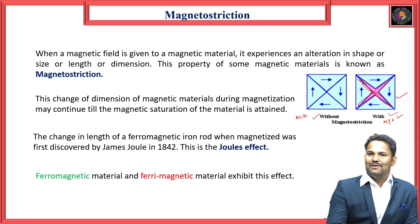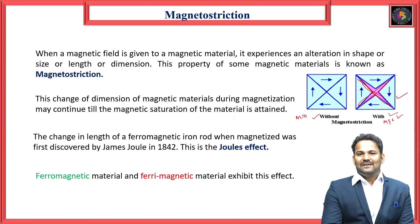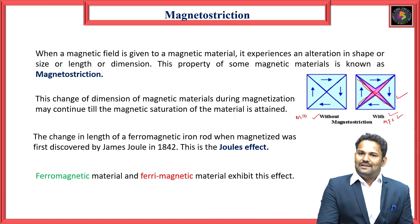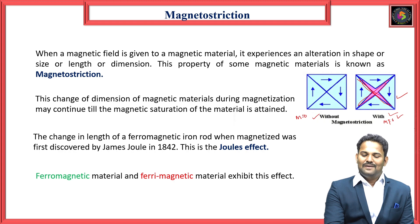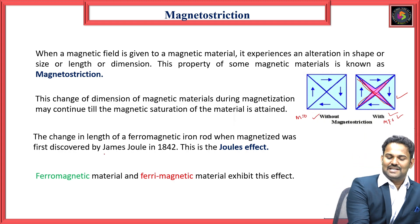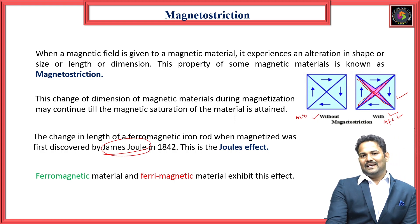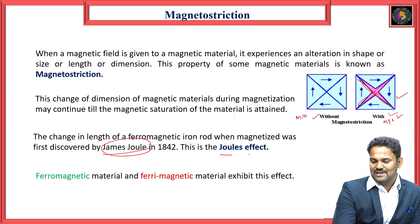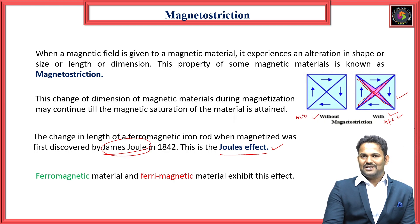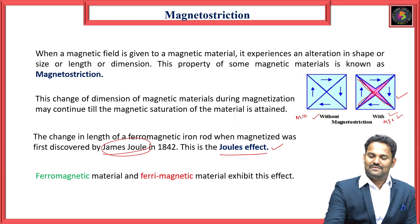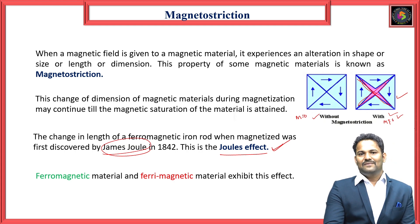The change in the length of a ferromagnetic material — for example, an iron rod — when it is magnetized was discovered by James Joule in 1842. This effect is known as Joule's effect. When we apply a magnetic field to a ferromagnetic material like an iron rod, it shows a change in length. Magnetostriction is generally exhibited by ferromagnetic and ferrimagnetic materials.